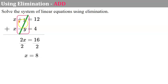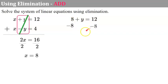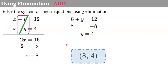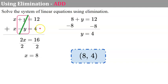Bring the 8 back to the first equation and replace x with 8. So now I have 8 plus y equals 12. Subtract 8 from each side and y is equal to 4. So my ordered pair, my solution, is (8, 4). Let's check: 8 plus 4 is 12; 8 subtract 4 is 4. It checks. Remember, if you graph this, it's the point where these two lines will intersect.